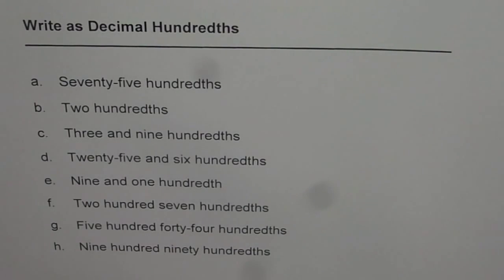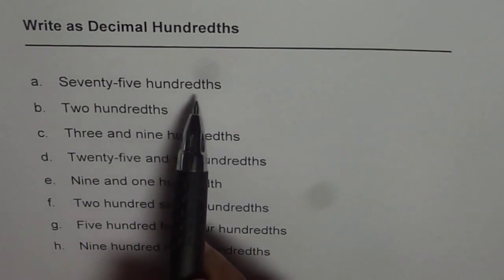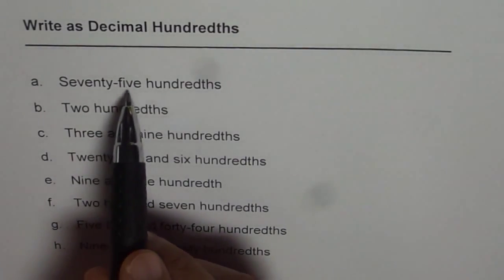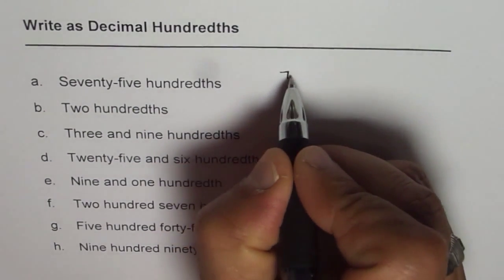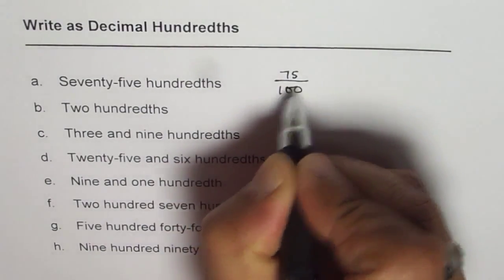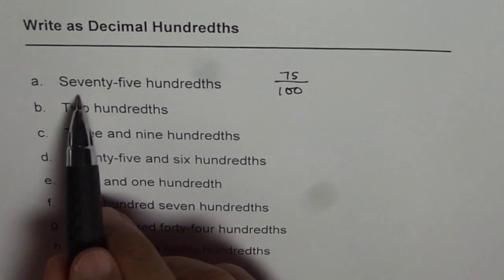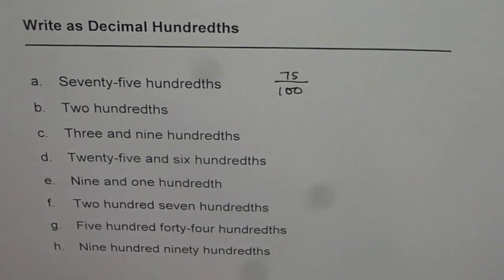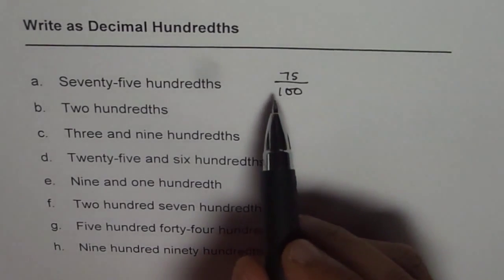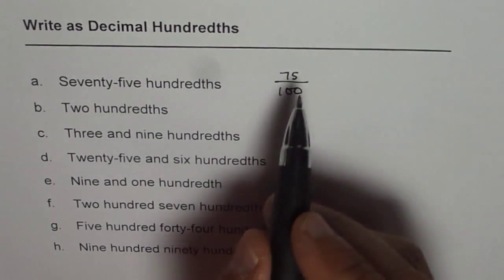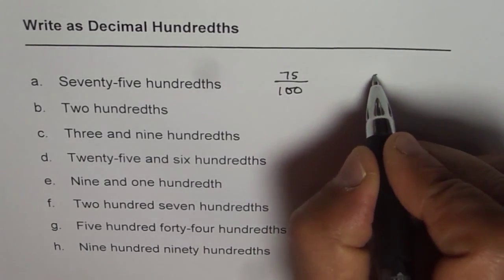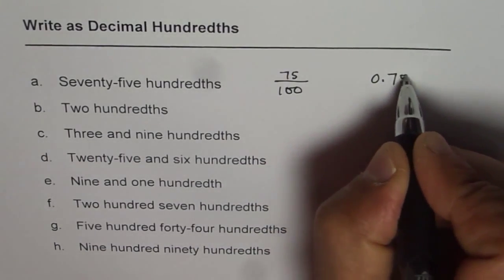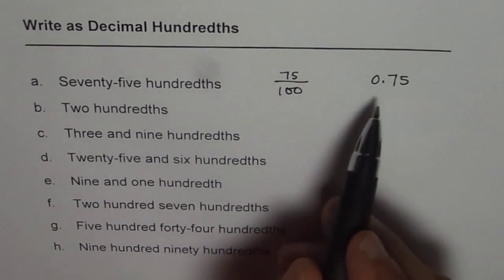I am Anil Kumar and in this video we will learn how to write decimals for hundredths. 75 hundredths means 75 over 100. Whenever you say 75 hundredths you can think about a fraction first and then write it as a decimal. If you divide 75 by 100, the decimal moves two places right and you get 0.75 as your answer.